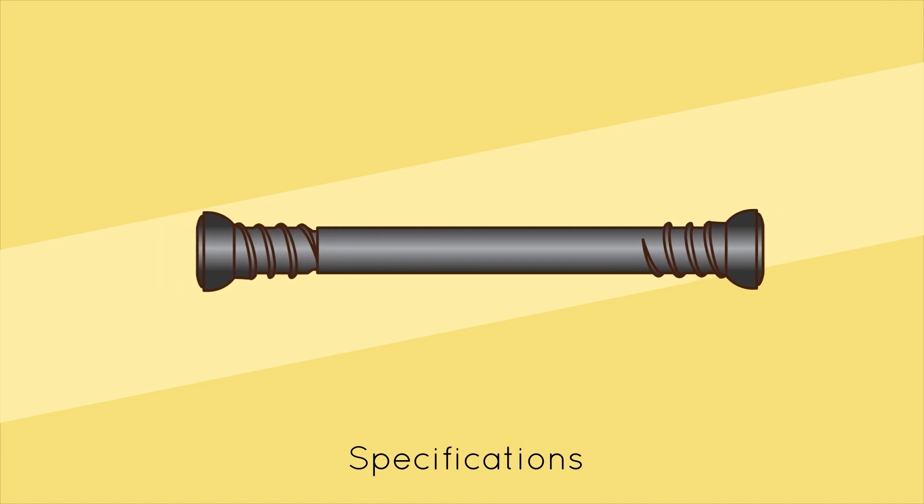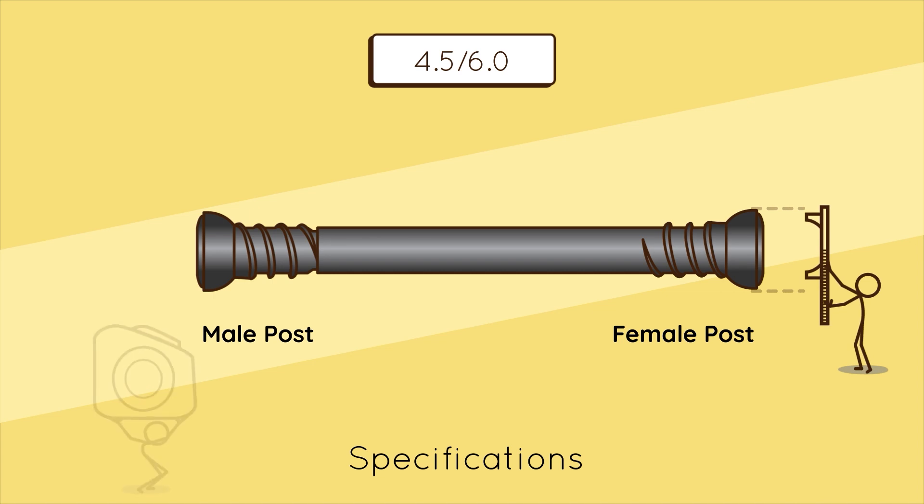The bicortical posts, comprised of a male and female post, are offered in 4.5 and 6 millimeter families with assembly lengths ranging from 40 to 90 millimeters.